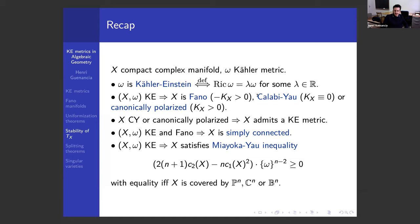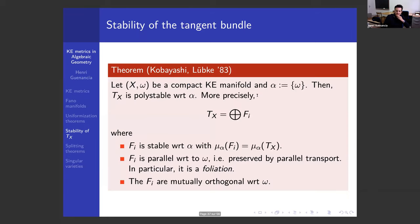That's roughly where we stopped yesterday. I defined briefly the notion of stability, also recalled in Danielle's talk. The theorem I already showed you yesterday says that a Kähler-Einstein manifold has a tangent bundle that's poly-stable. That's due to Kobayashi and Lübke in the early 80s.